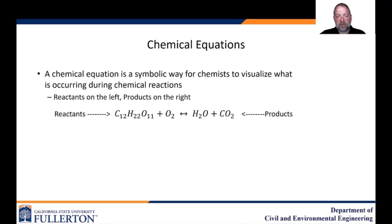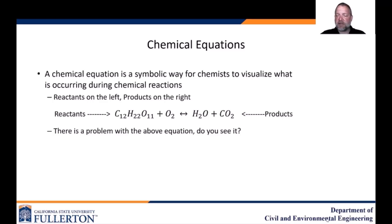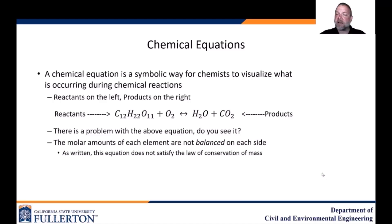A chemical equation is a symbolic way for chemists to visualize what is occurring during chemical reactions — reactants on the left, products on the right. Here we have sucrose C12H22O11 plus oxygen yields water plus CO2, which is what happens in your body when you eat sugar. Sucrose on the left combines with the oxygen that you breathe to make water and CO2 that you then breathe out. But did anyone notice there's something wrong with this equation?